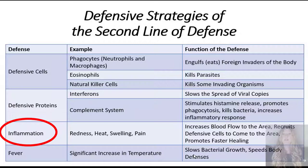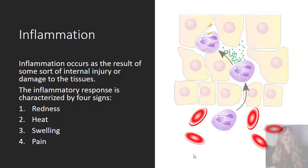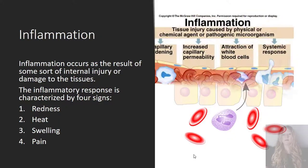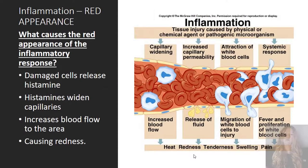Next, we'll discuss another defensive strategy of our second line of defense: inflammation. Inflammation occurs as the result of some sort of internal injury or damage to the tissues. The inflammatory response is characterized by four following signs: redness, heat, swelling, and pain. The red appearance is caused by the damaged cells releasing a chemical called histamine.